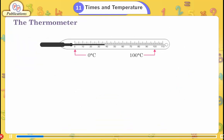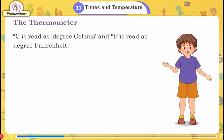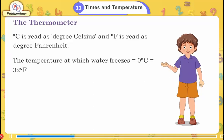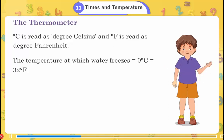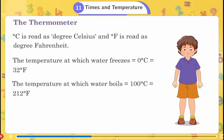The Thermometer. The thermometer is a thin glass tube with a bulb at its top and a scale marked on its body. Either the Celsius scale or the Fahrenheit scale is used. Degree C is read as degree Celsius; degree F as degree Fahrenheit. The temperature at which water freezes is 0°C, which equals 32°F.